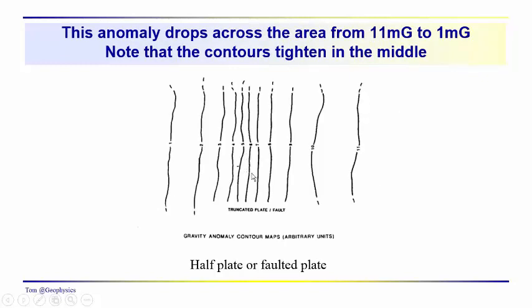So here's another anomaly. It drops from 11 to 1. We've got about a 10 milligal drop. The contours tighten in here, so this could be associated. We could use a half plate or a faulted plate in order to model or approximate the geology producing this particular anomaly. The anomaly drops to about one half of its minimum or up to one half of its maximum at a point directly over the fault edge. So we'd be putting the fault somewhere in here.